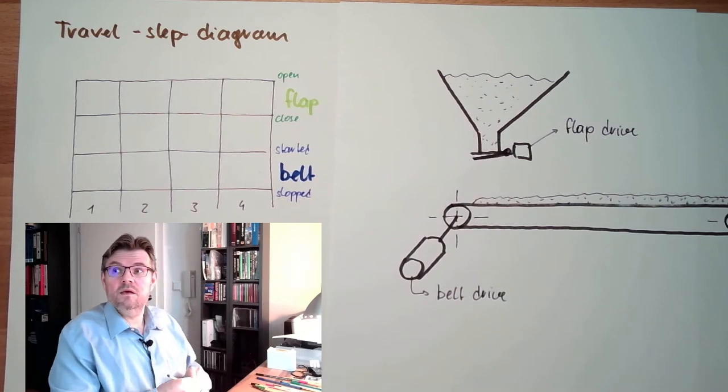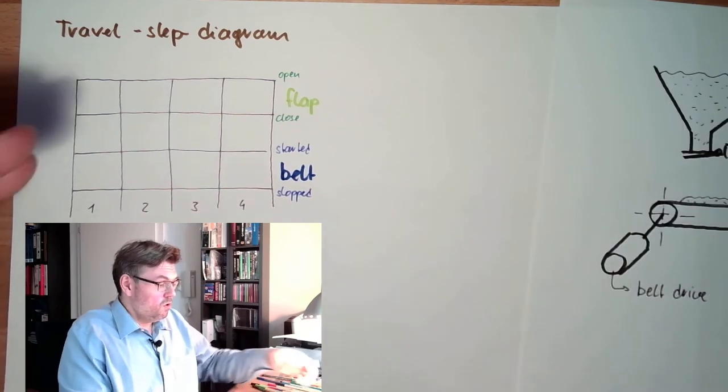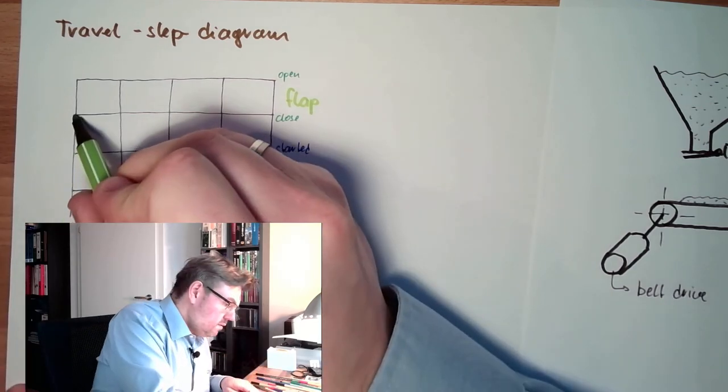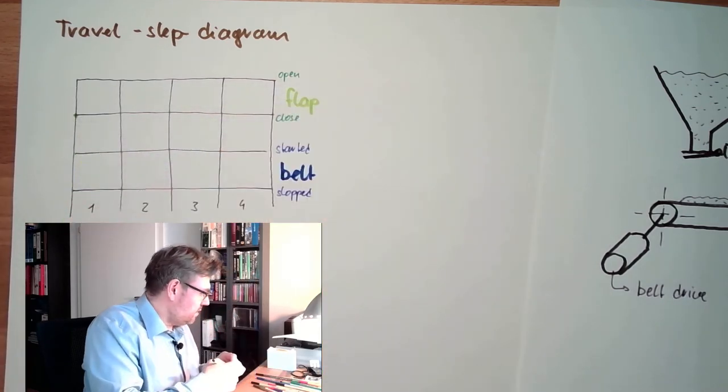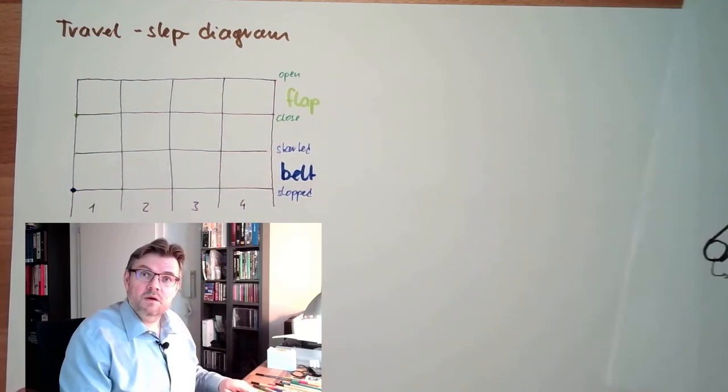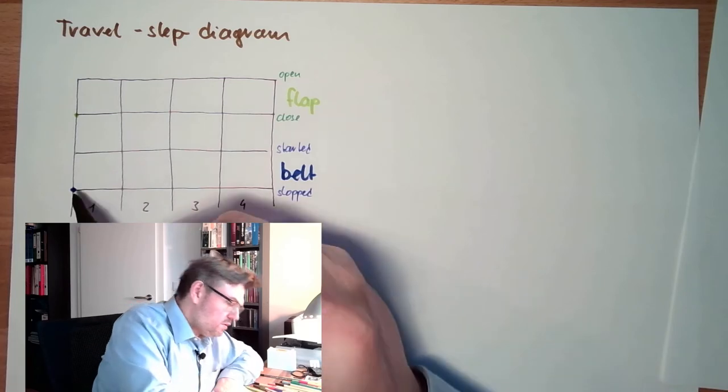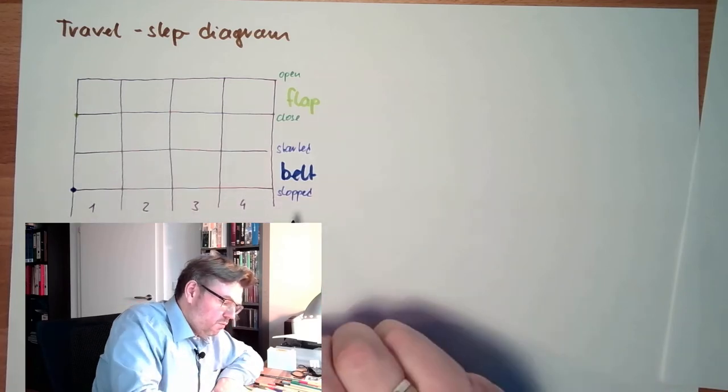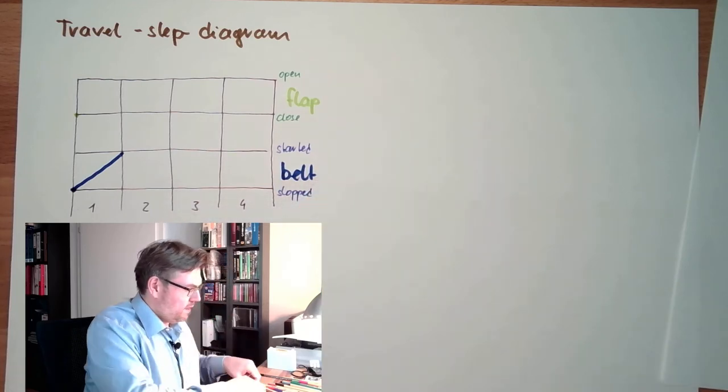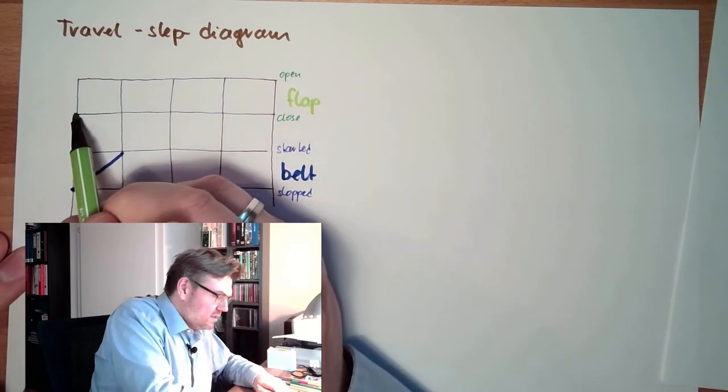In the beginning, the flap is closed, so we are here. And the belt is stopped, we are here. First step, start the belt. So in first step, we change from stopped to started in the belt. The flap stays closed.